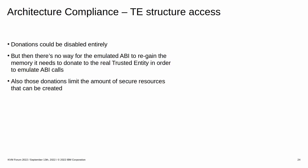If the amount of memory donation for certain ABI calls is specified by the trusted entity via an interface, then donation could be disabled entirely. But that would also mean the level 0 ABI emulation has no way of reclaiming the amount of memory it donates to the real trusted entity. Also, the donation serves as a limiting factor when creating secure resources, as effectively memory is removed from the caller.